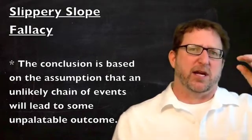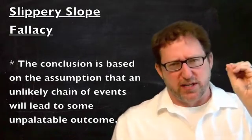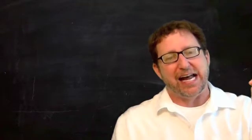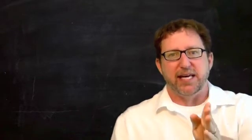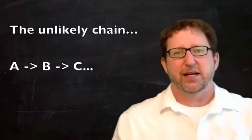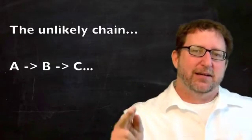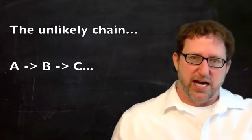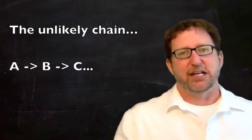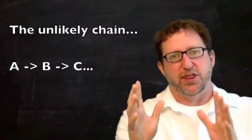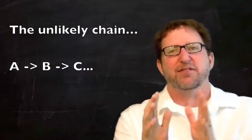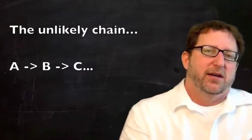So if we agree to this, if we agree to position A, or we allow A to happen, A will lead to B, B will lead to C, C will lead to D, and D is horrible. So we should not endorse A. So there's sort of a slope. One thing will lead to another. There's a chain of events that will occur.